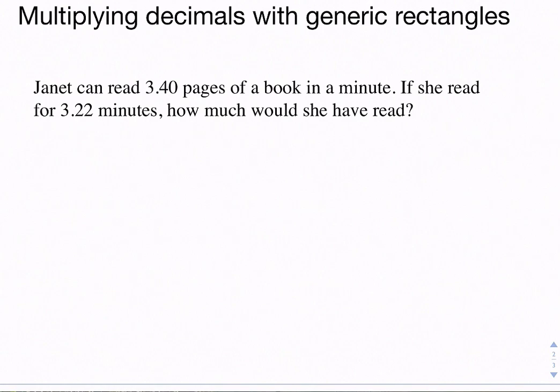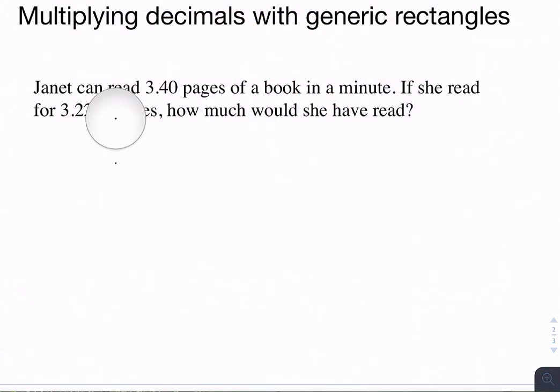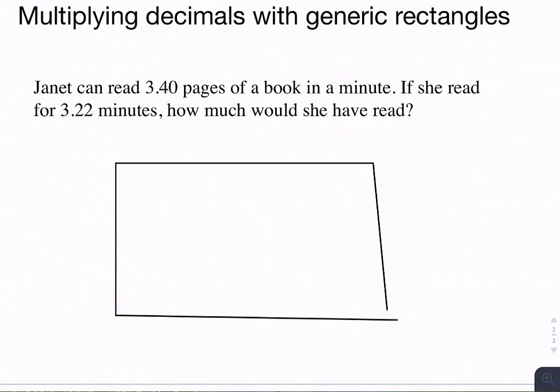We have Janet who can read 3.40 pages of a book in a minute. If she read for 3.22 minutes, how much would she have read? Really what we're trying to do is multiply those decimals together. We're going to set this up like a generic rectangle. It's going to be a 3 by 3 because we have a 3 digit number by a 3 digit number.